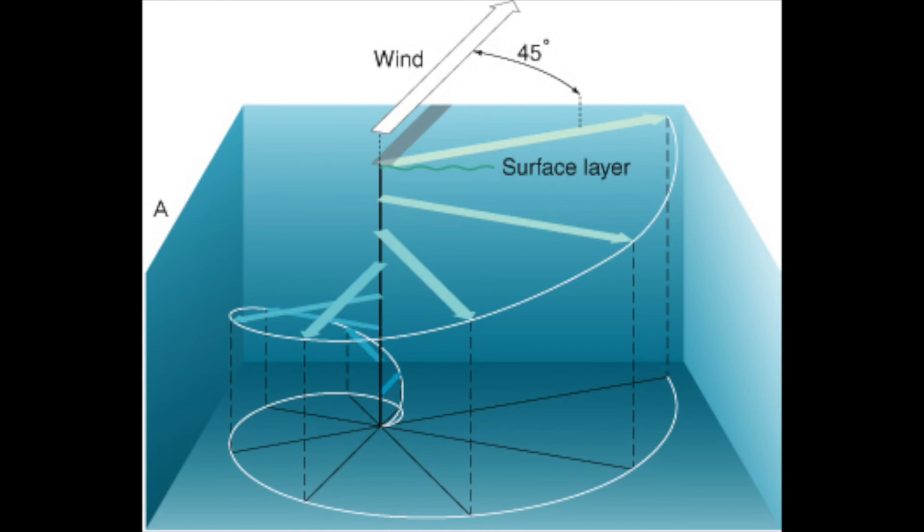So, in short, the Coriolis effect deflects moving objects to the right or left, depending on the hemisphere. When the surface layer of the ocean deflects at an angle, it drags the water underneath it with decreasing force in a spiral shape. This movement of water provides marine life with nutrient-filled water, which is why Ekman transport is so important to coastal environments. Thanks for watching, and I hope you learned something new today.